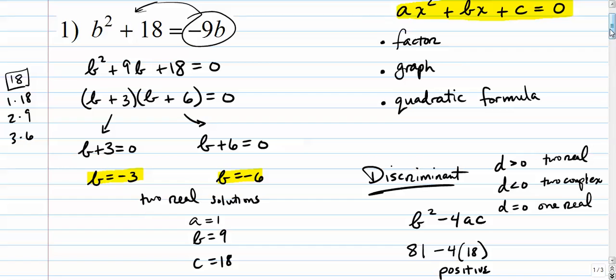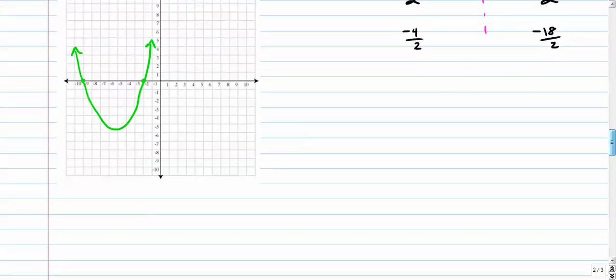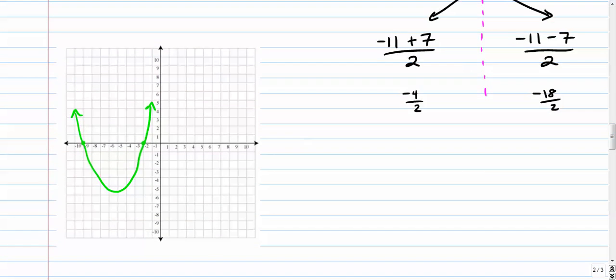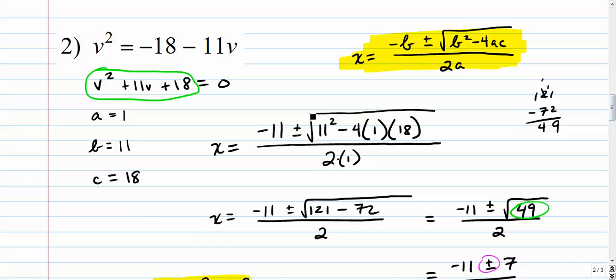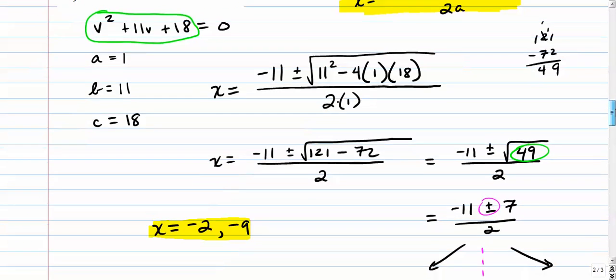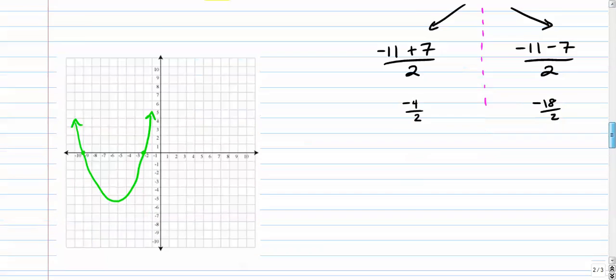All right, getting back to this idea, right? So again, number 2 was factorable. If you wanted to factor that, you would go and factor it really quickly. It's v plus 2, v plus 9. But the quadratic formula works as well. All right. So again, we looked at graphing. We looked at factoring. We looked at quadratic formula. Those are the three really easy ways to figure out solutions to quadratics.